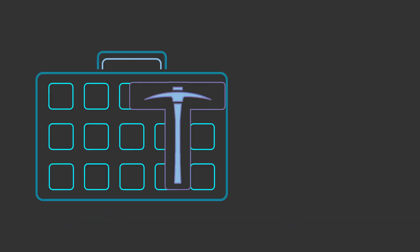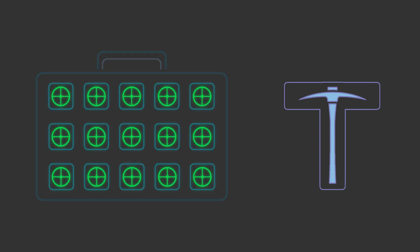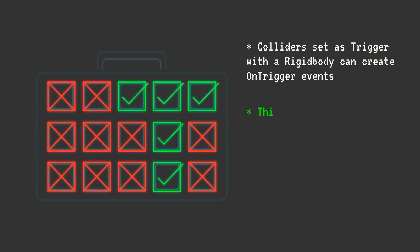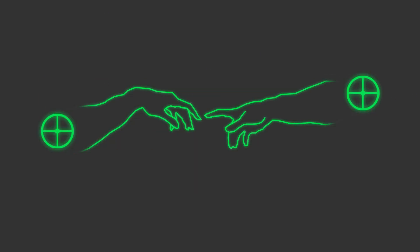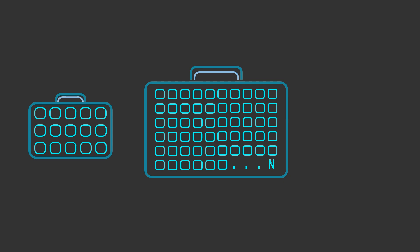Now, how do we actually link an item to a set of cells? This is where Unity's sphere colliders come in. By adding a small collider set as a trigger to each cell, and another to every anchor point of an item, we can detect when an anchor point enters a cell's area. If an anchor point is inside a cell, that means the item that holds it is there too — think of it like two hands grabbing each other, creating a connection between the item and the inventory cell. Of course, if your inventory has hundreds of cells, this collision-based approach might not be the most efficient — keep that in mind.